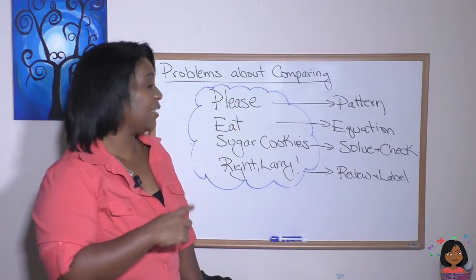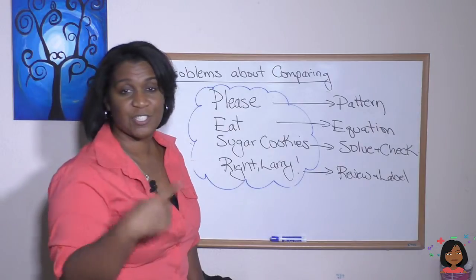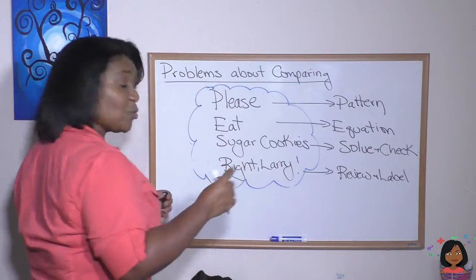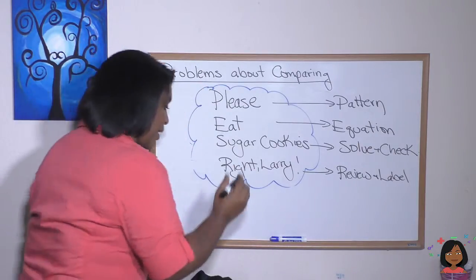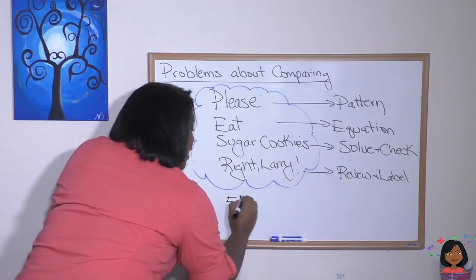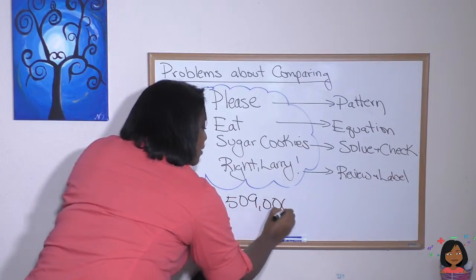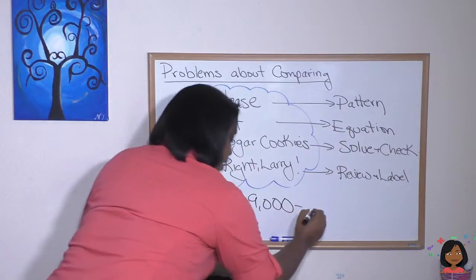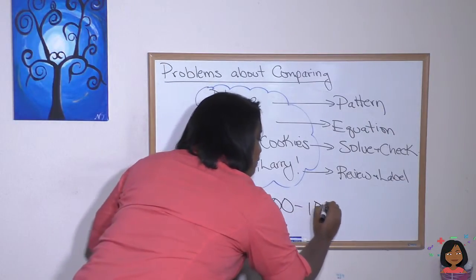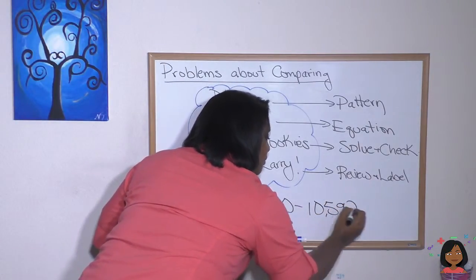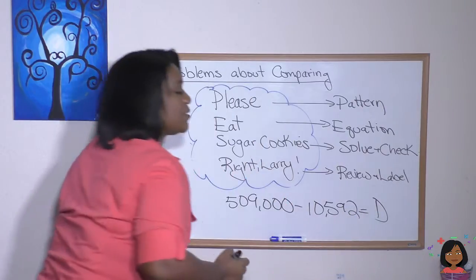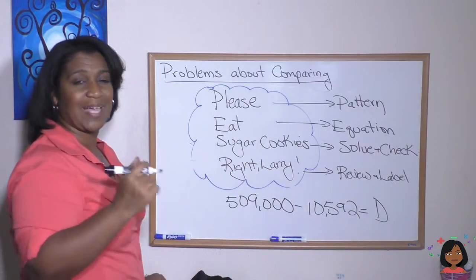Now let's do E. E is for equation. Let's do our equation. So we take the larger number, which in this case is 509,000, and we subtract the smaller number. In this case that is 10,592. And the D is the difference. We don't know what that is. We make that the variable.